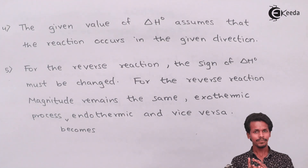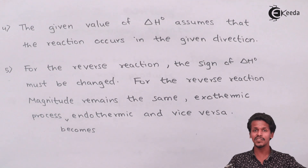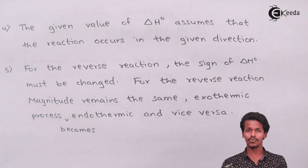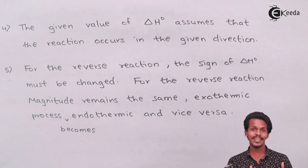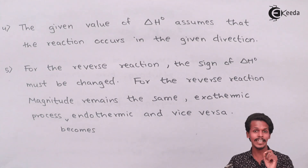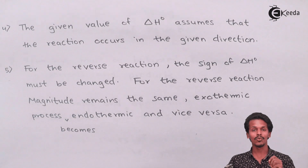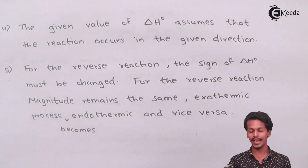ΔH also indirectly gives us the direction of the reaction. If we reverse the reaction — converting C + D back into A + B — the ΔH changes sign from +20 kJ to −20 kJ, indicating the reaction has been reversed. This is the fourth guideline: ΔH gives the value for the forward or given direction of a particular reaction.